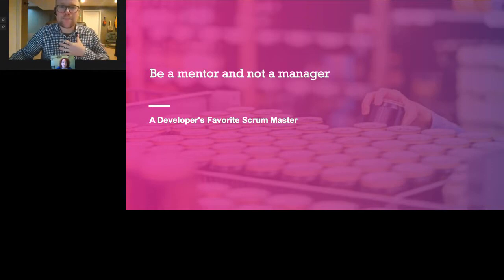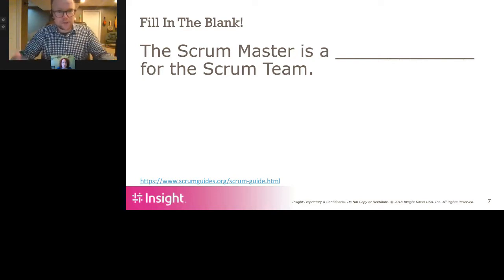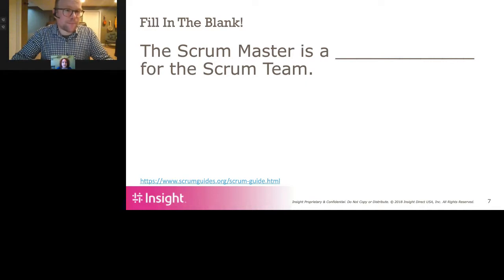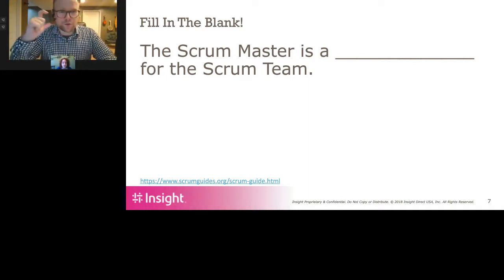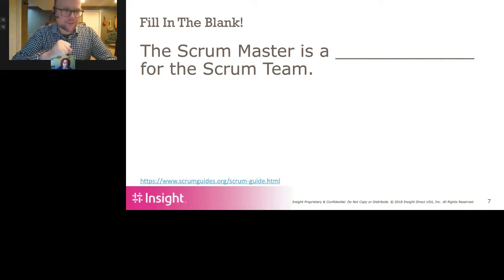The scrum master is a blank for the scrum team — if you know it or have a guess, feel free to drop it in the chat. The scrum guide is fairly loose in its structure and gives you room to mold your team to the needs of your organization, but it is very prescriptive about how the different members and roles within the scrum team interact with each other. There is a very unique phrase it uses to describe what the scrum master should be to the scrum team. Lindsay, have we had any guesses come through?